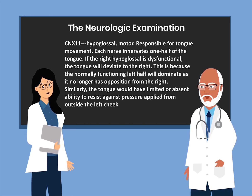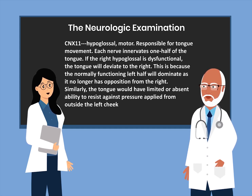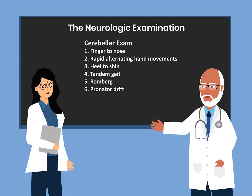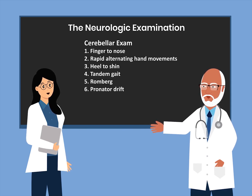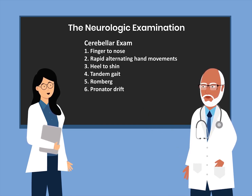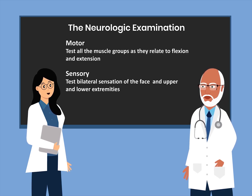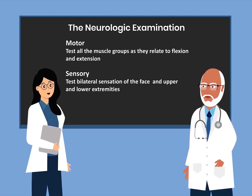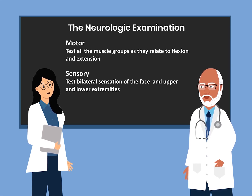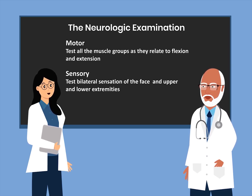The tongue would also have limited or absent ability to resist against pressure applied from outside the left cheek. The next component is the cerebellar exam. This includes finger-to-nose, rapid alternating hand movements, heel-to-shin, tandem gait, Romberg, and pronator drift. The next component is the motor exam — all muscle groups as they relate to flexion and extension should be tested bilaterally in the upper and lower extremities. The sensory component involves testing sensation bilaterally on the face and in the upper and lower extremities.